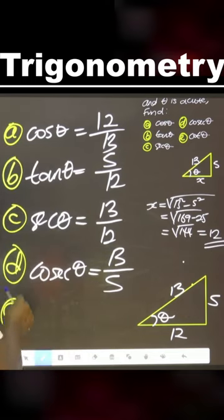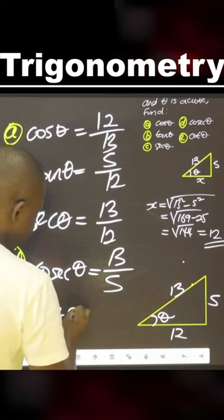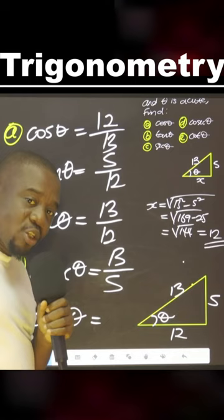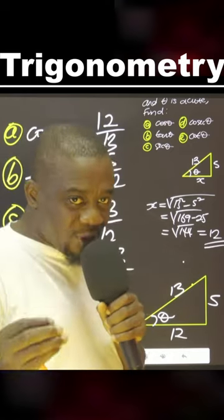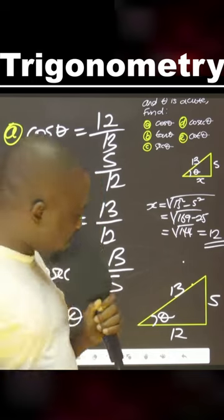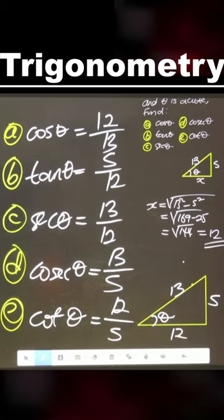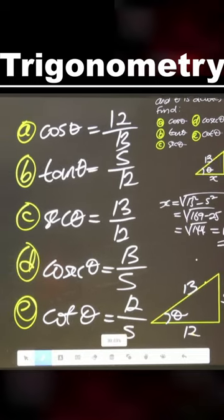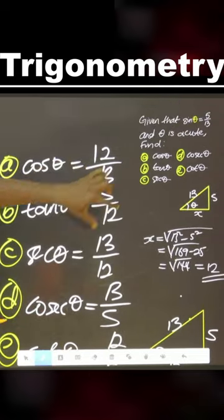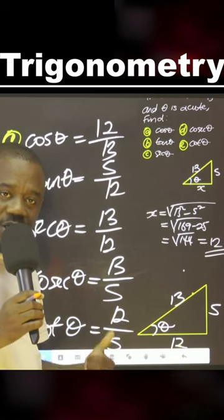Finally, we have cot theta. Cot theta is 1 over tan. Tan is opposite over adjacent, the reciprocal is adjacent over opposite. Adjacent over opposite. So these are the answers for the question asked. Hope this is understood. Thank you for viewing.